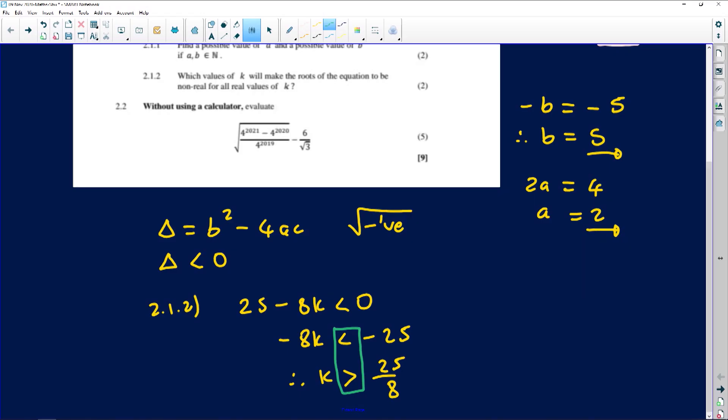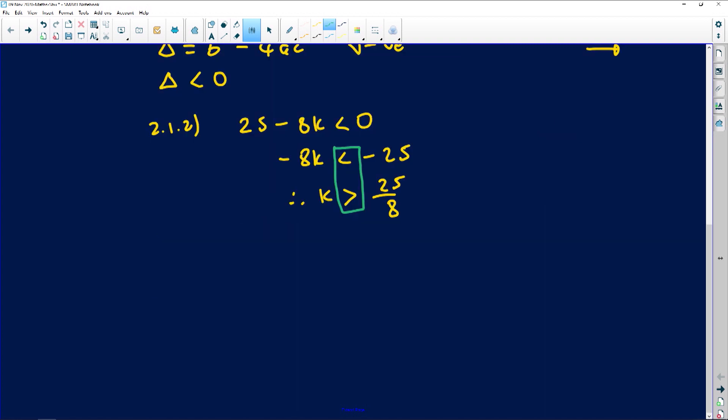Moving right along. The next question, question 2.2, says simplify without using a calculator. It says evaluate what we're looking at there. That's pretty exciting. So let's copy that down and try to find the value. That's basically question 2.2: we have to find the value of √(4²⁰²¹ - 4²⁰²⁰) / 4²⁰¹⁹ minus 6/√3. The tricky part is they're saying we're not allowed to use a calculator.